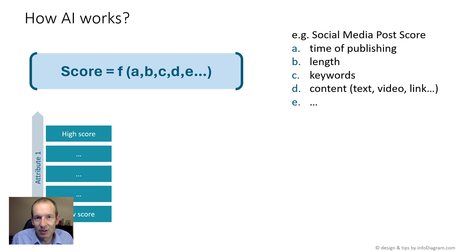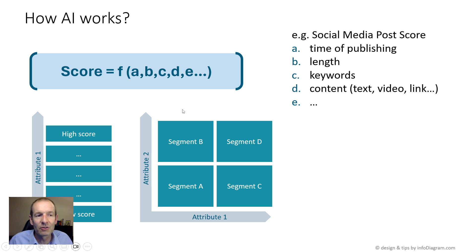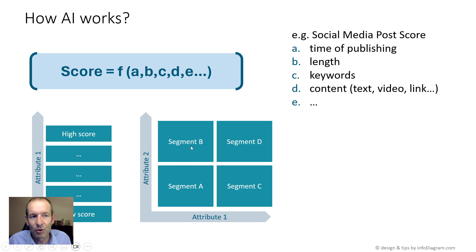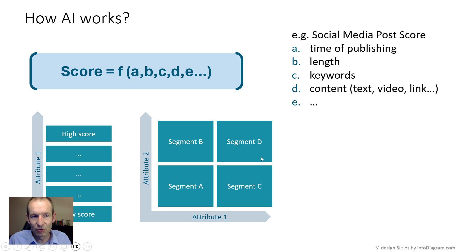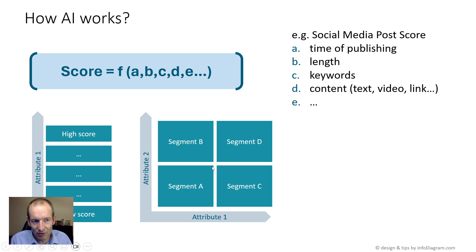However, in the real world there are many more parameters than just one, so let's move on. With two parameters, you can show it visually as a matrix or quadrants. You can show how your post score depends on, say, time of publishing and length, or time and the relevance of keywords used — and you can explain how the score works across those two dimensions.